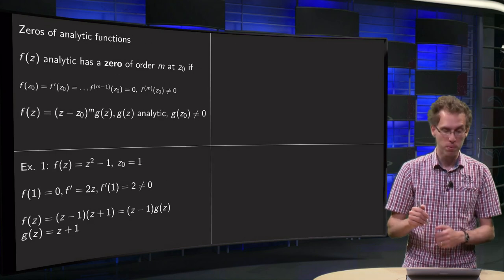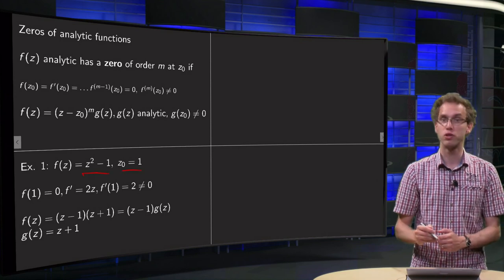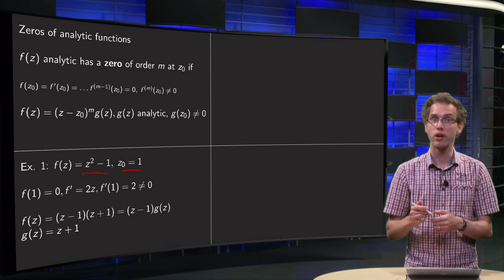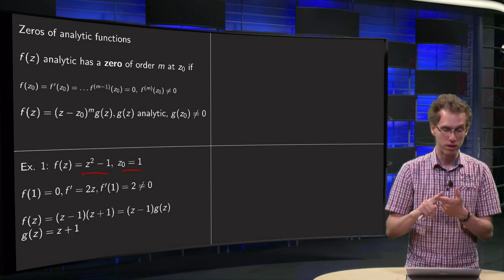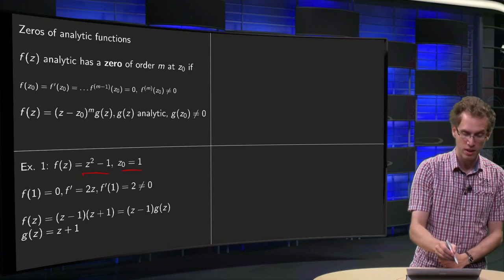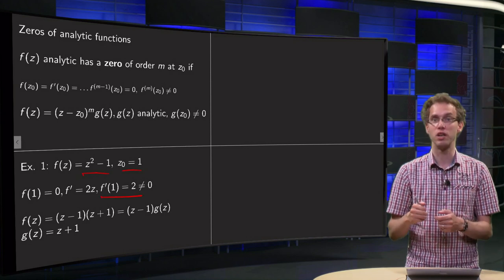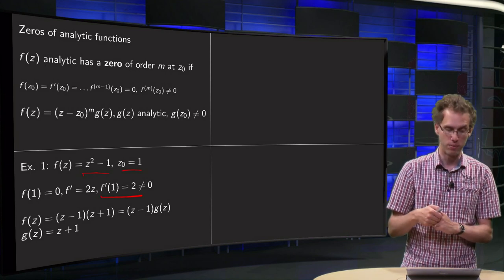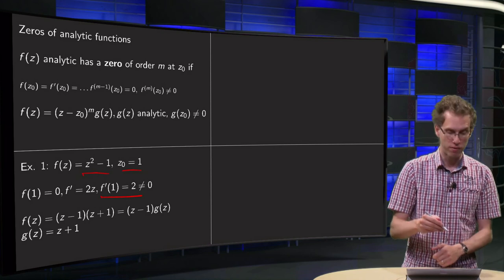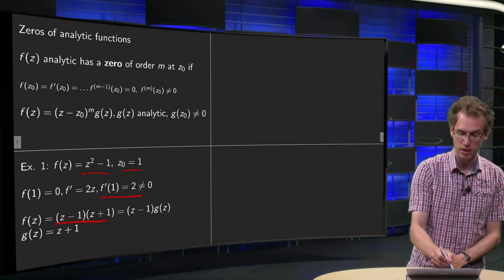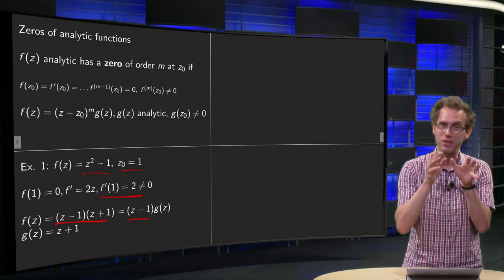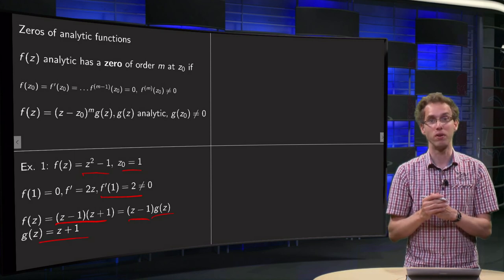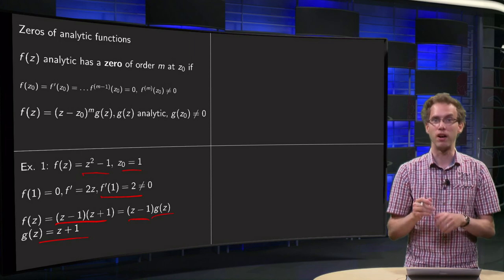Let's do an example: f of z equals z squared minus 1, and z-zero equals 1. If you plug in 1 you get zero, so 1 is a zero of f — but of which order? We have f of 1 equals zero; f prime equals 2z, and if you plug in 1 we get f prime of 1 equals 2, which is not equal to zero. So only f is zero, not its derivative, so it is a zero of order 1 at z equals 1. And you can write f as (z minus 1) times (z plus 1), where the second factor G of z is not equal to zero at 1.